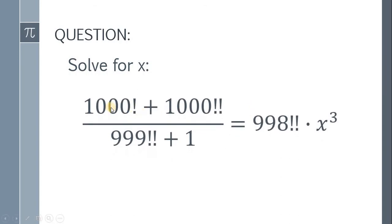So let's start. Here's the question. Solve for the variable x. We have 1000 factorial plus 1000 double factorial all over 999 double factorial plus 1, is equal to 998 double factorial multiplied by x cubed.